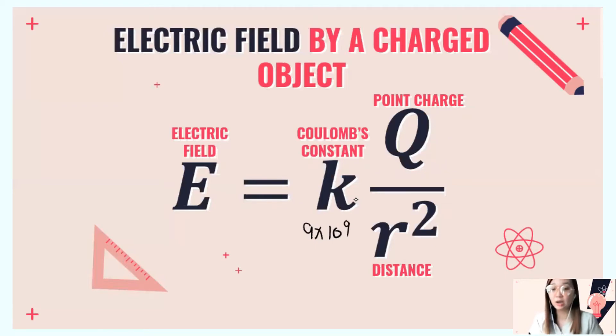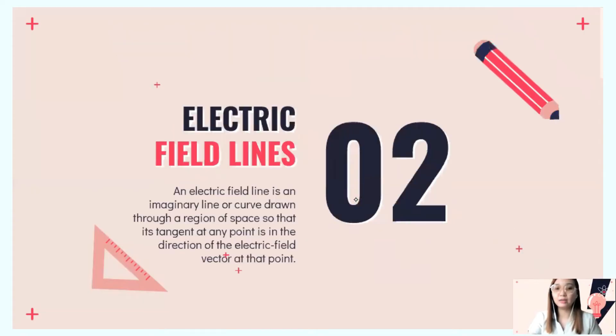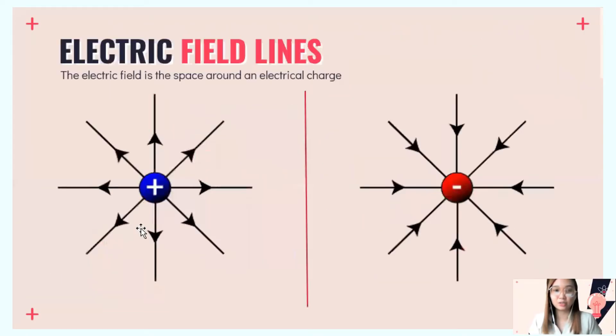Electric field can be illustrated through electric field lines, and every charged particle has a distinct field line. For protons—positive charge—the field line is directed outward from the charge. For electrons—negative charge—the direction of the field line is toward the charge.